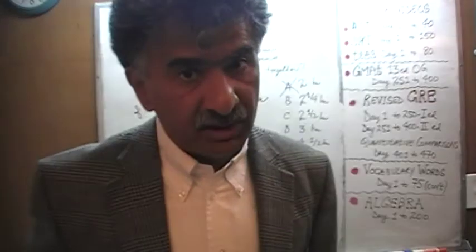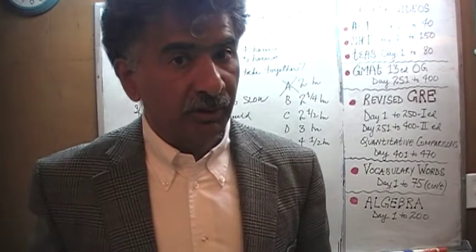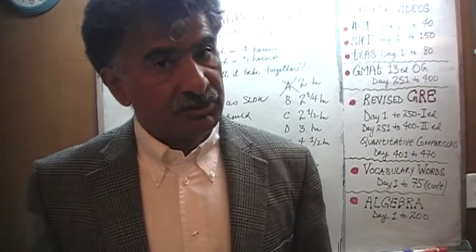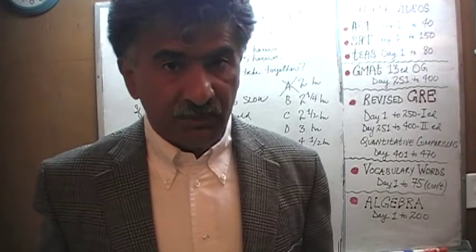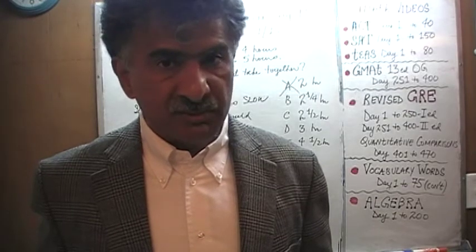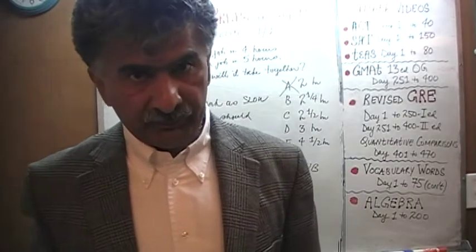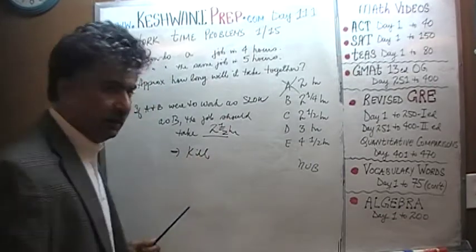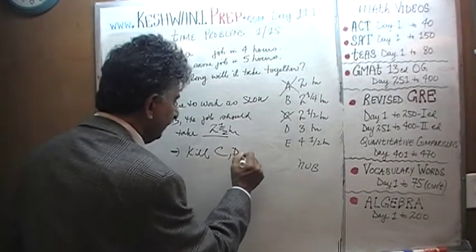What does that tell us? It tells us that the correct answer, whatever it is, cannot be more than two and a half hours. It cannot be equal to two and a half hours because both of them are not working as slow as the slow guy. Which means they cannot possibly take more than two and a half hours. That implies we can kill anything that is two and a half or more — we can kill C, D, and E.